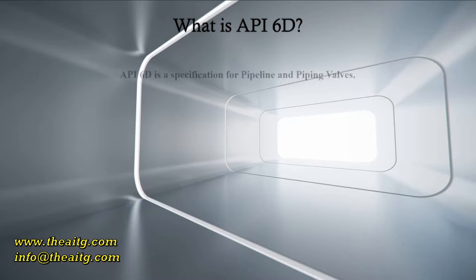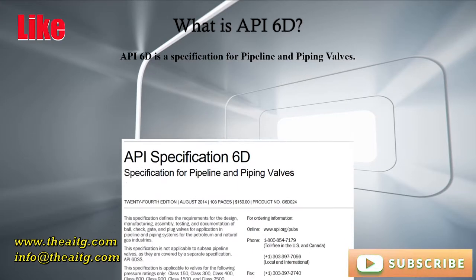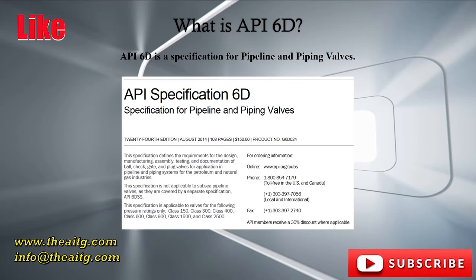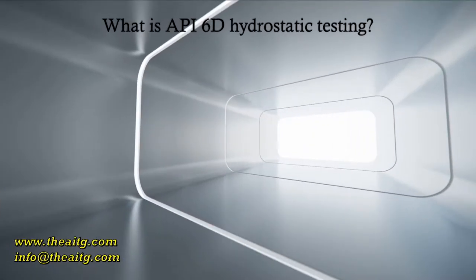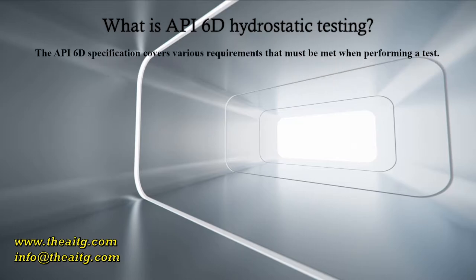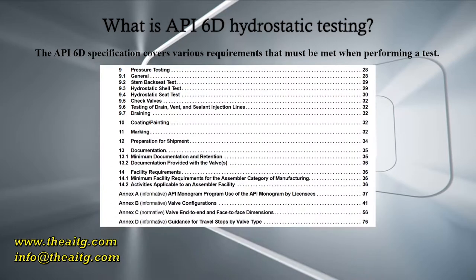What is API 6D? API 6D is a specification for pipeline and piping valves. This specification defines the requirements for the design, manufacturing, assembly, testing, and documentation of various valves.